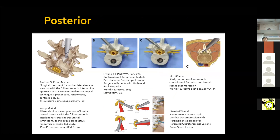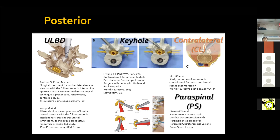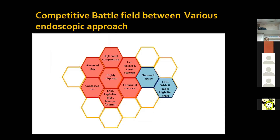Recently, the development of the posterior approach in endoscopic spine surgery has been remarkable. Since around 2015, the Ruetten group in Germany introduced endoscopic ULBD (unilateral laminotomy for bilateral decompression), and most degenerative pathologies could be addressed by the posterior approach in endoscopic spine surgery, similar to conventional surgery. Not only the lateral recess but also the contralateral spinal canal and contralateral foraminal area can be accessed by the contralateral approach. The far-lateral spine approach using the classic Wiltse corridor has also been established for thorough foraminal decompression. Now we can have several endoscopic approaches to treat various lumbar pathologies.